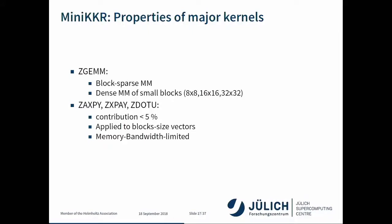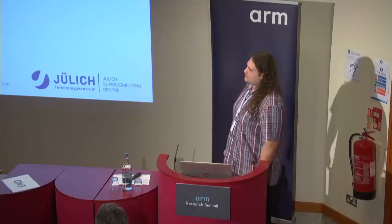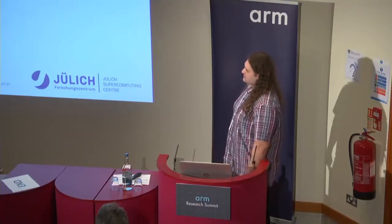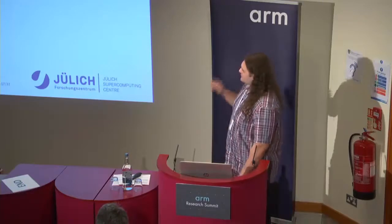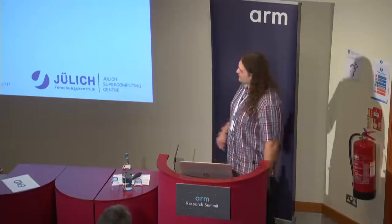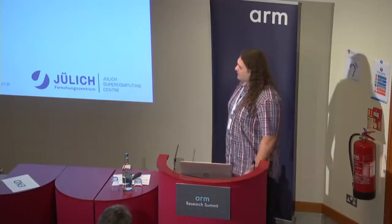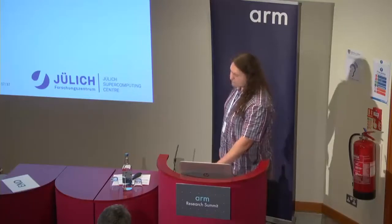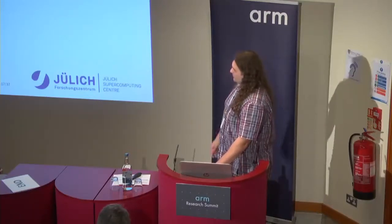Some properties of these kernels: ZGEMM, as already mentioned, is actually a block sparse matrix-matrix multiplication, so there are a lot of ZGEMM calls on small matrices in a loop. The other kernels are ZAXPY, ZAXPY, and ZDOTU — also BLAS kernels except for ZAXPY, which is a derivative. They contribute under 5% to the total compute load and apply to 16-element vectors.